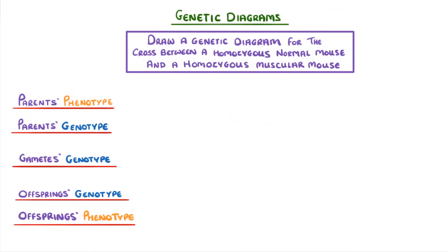So in our example, we're told that one of the parents is homozygous for normal muscle, which means the genotype will be capital A capital A and the phenotype will be normal.